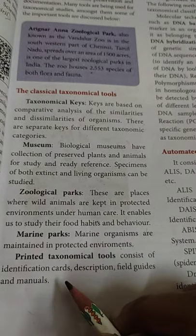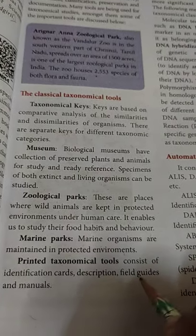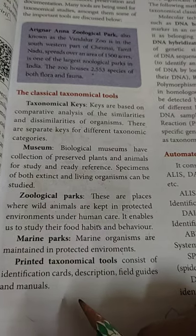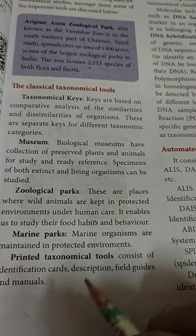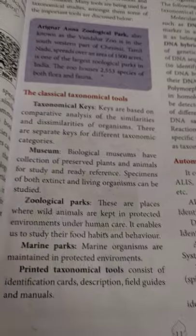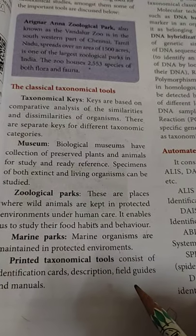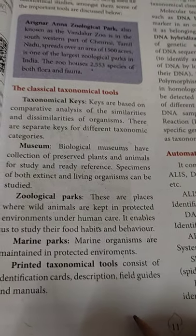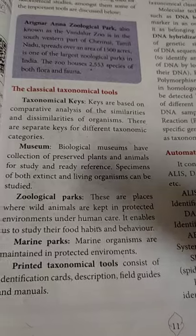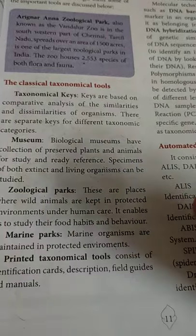Printed taxonomical tools consist of identification codes, descriptions, field guides, and manuals. These provide lists and ID cards as the main source for guiding taxonomical work.